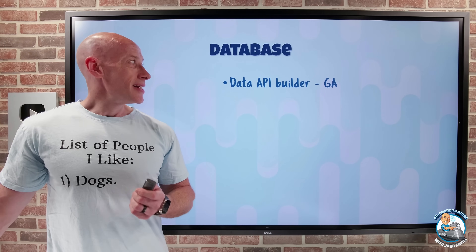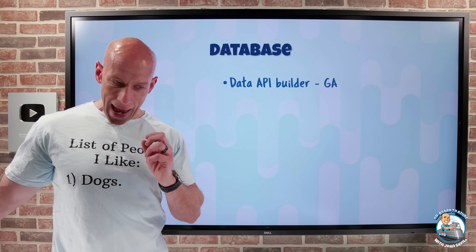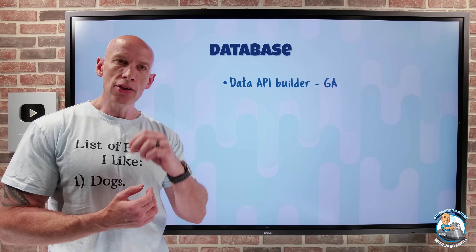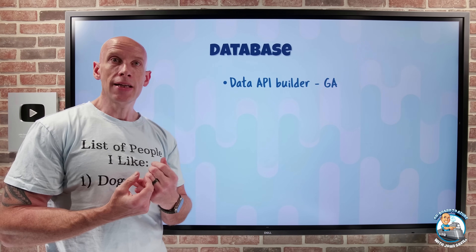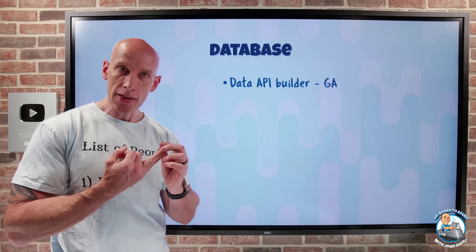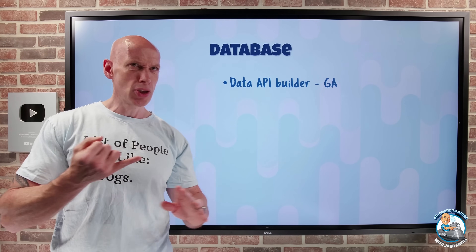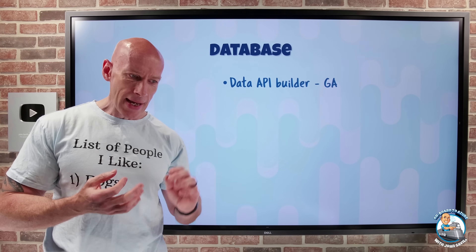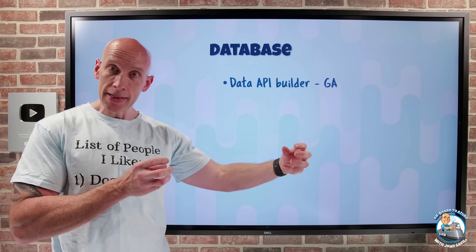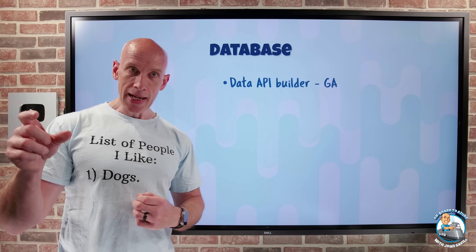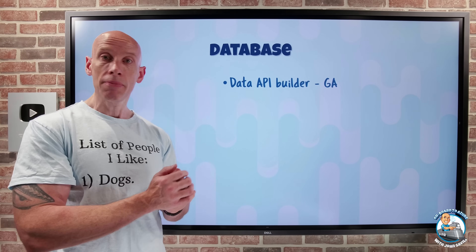On to the database side. The Data API Builder has gone GA. This is an open source project developed by Microsoft — basically a Docker container image. What it does is abstract away your specific backend database to provide a REST API and a GraphQL interface to whatever application wants to talk to your database. It supports Postgres, MySQL, Microsoft SQL Server, and Cosmos DB. You run this Docker image in a container, tell it which database to connect to, and it will automatically generate the schema and expose it as a REST API via GraphQL.